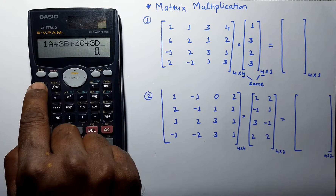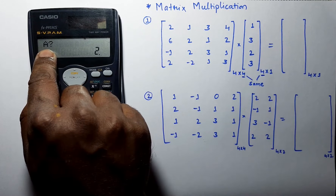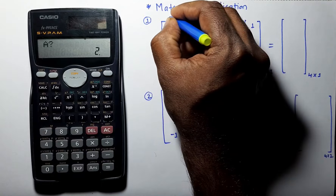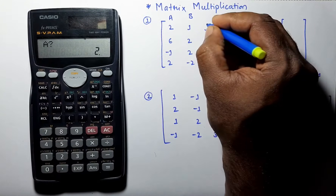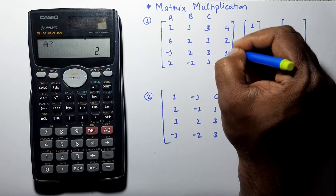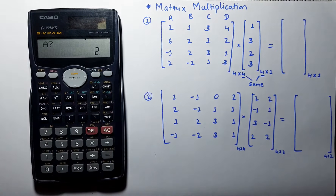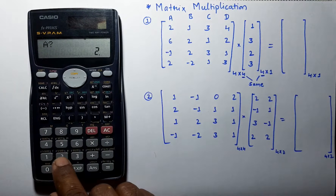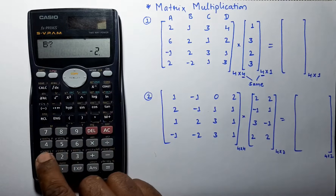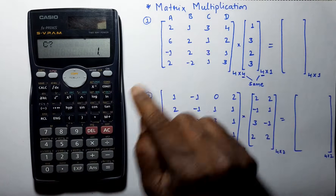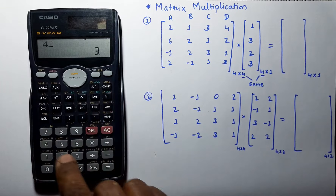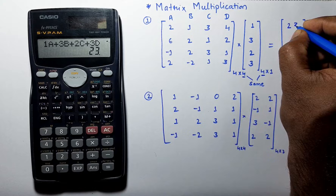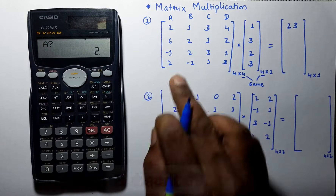Now press the calculate button. It will ask for the value of a. This first column is a, the second column is b, the third is c, and the fourth is d. Enter the value of a as 2, b as 1, c as 3, and d as 4.